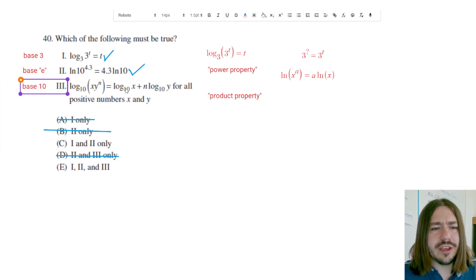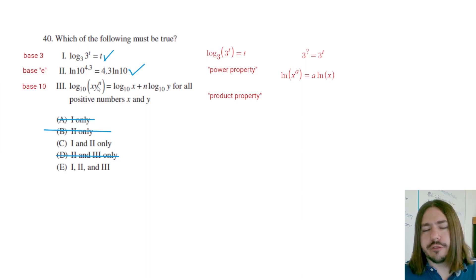Now what's kind of interesting here is they actually write the 10 here. That's pretty unconventional. Usually when you have base 10, you just don't write a base. It's pretty common to just see like log of whatever. In fact, if you look at your calculator, you'll see you have a log button and it'll just say log, won't actually have a base on it. There actually is an implied base here and the base is 10, so usually you don't see that 10.